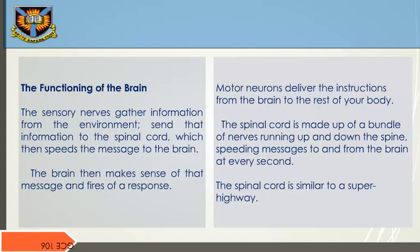The functioning of the brain: The sensory nerves gather information from the environment and send that information to the spinal cord, which then sends the message to the brain. The brain then makes sense of that message and fires off a response. Motor neurons deliver the instructions from the brain to the rest of the body. The spinal cord is made up of a bundle of nerves running up and down the spine, speeding messages to and from the brain at every second — similar to a superhighway.